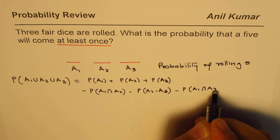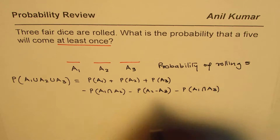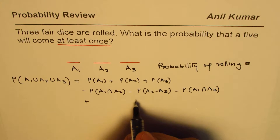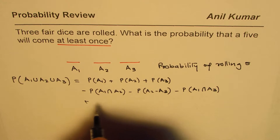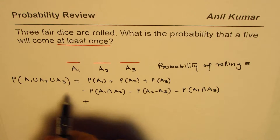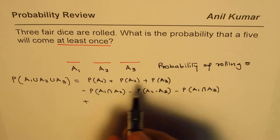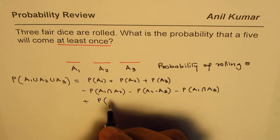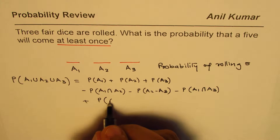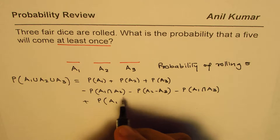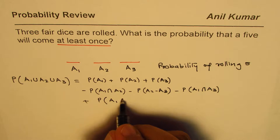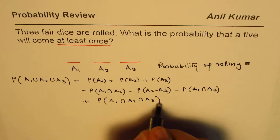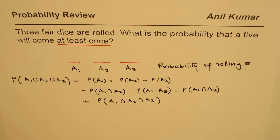Once we take away all those common ones, we have to include the probability that all three are five — that is, the probability of A1 ∩ A2 ∩ A3. So when you have more than two events, the union formula becomes the full inclusion-exclusion expression.